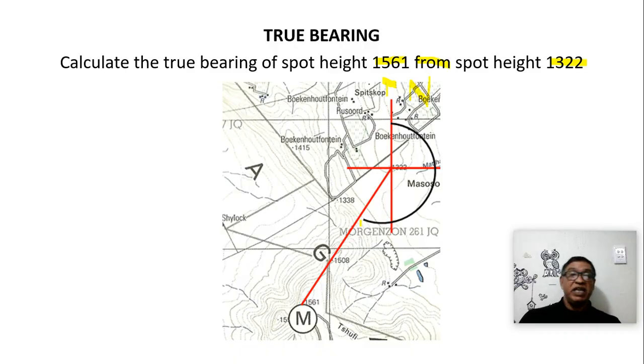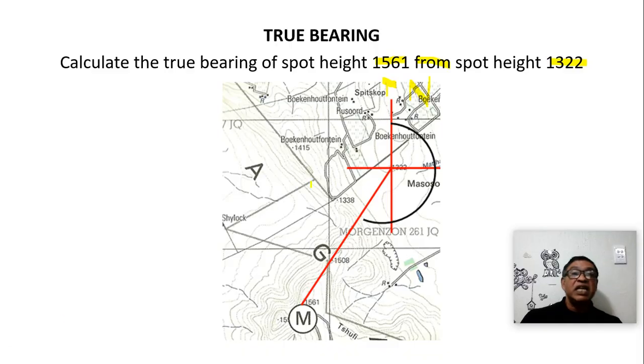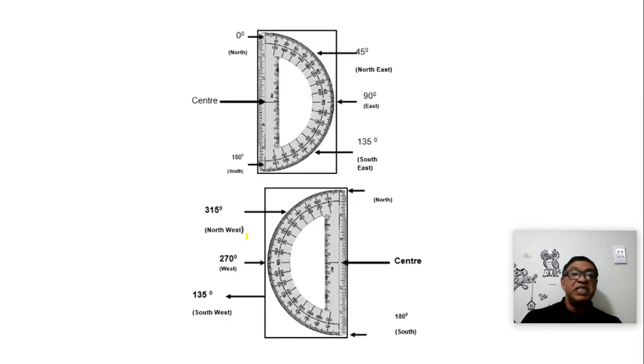That's how we calculate our true bearing from the true north in a clockwise direction. Another important thing to note when using our protractor, we must make sure the zero point is on the true north line. The true north line I'm referring to is the line down here. So our protractor must be there.